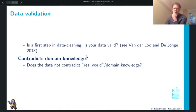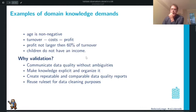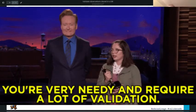As we all know, data cleaning is a very important step in our work, and one of the first things you should do is checking if your data is valid. For example, it's wise to check if age is non-negative, or that children do not have an income. Validation not only helps you check the quality of your data, but also communicate about it, and to make your domain knowledge explicit and reusable so checks can be repeated.